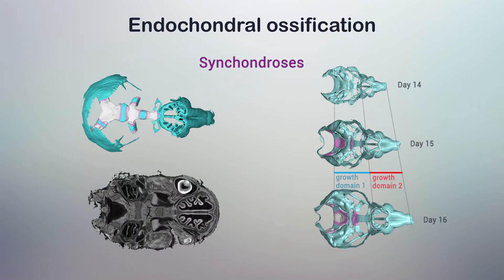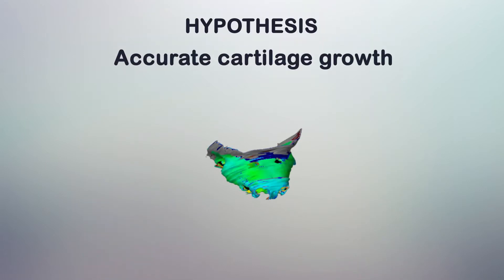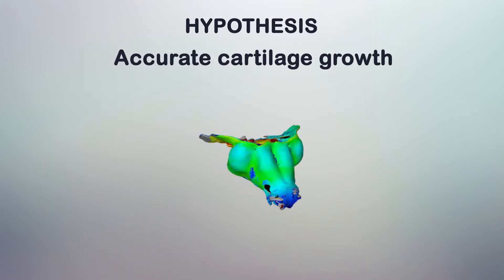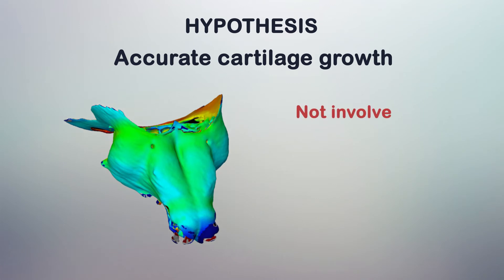Since growth plates or synchondroses in the skull are oriented towards a specific direction, the expansion of cartilage in other dimensions is not clear from the mechanistic point of view and requires further investigation. We hypothesized that accurate cartilage growth might require alternative cell dynamics that do not involve hypertrophy, ossification, or growth plates.